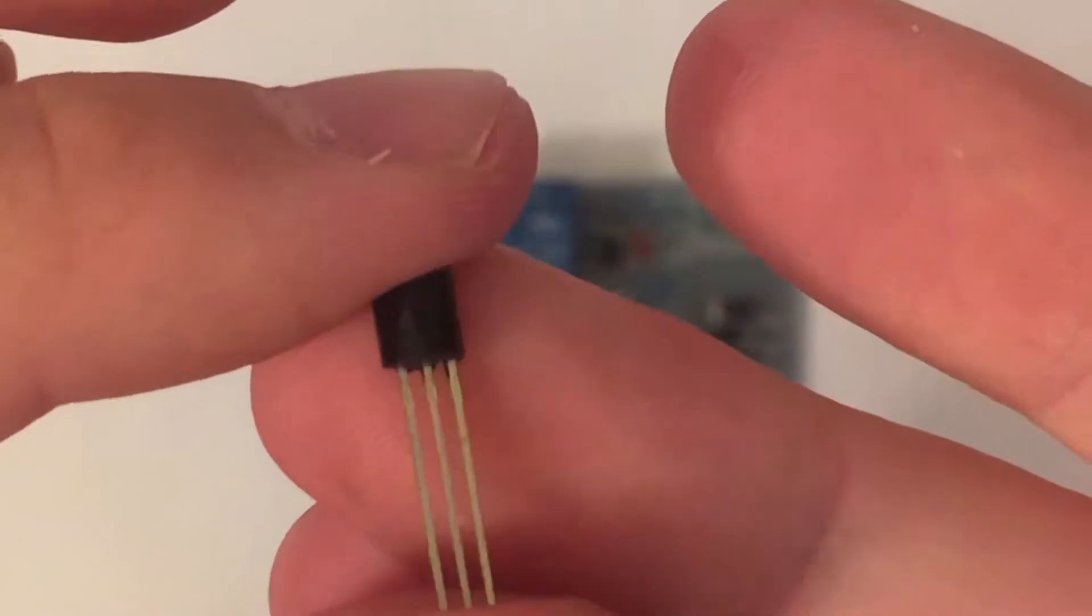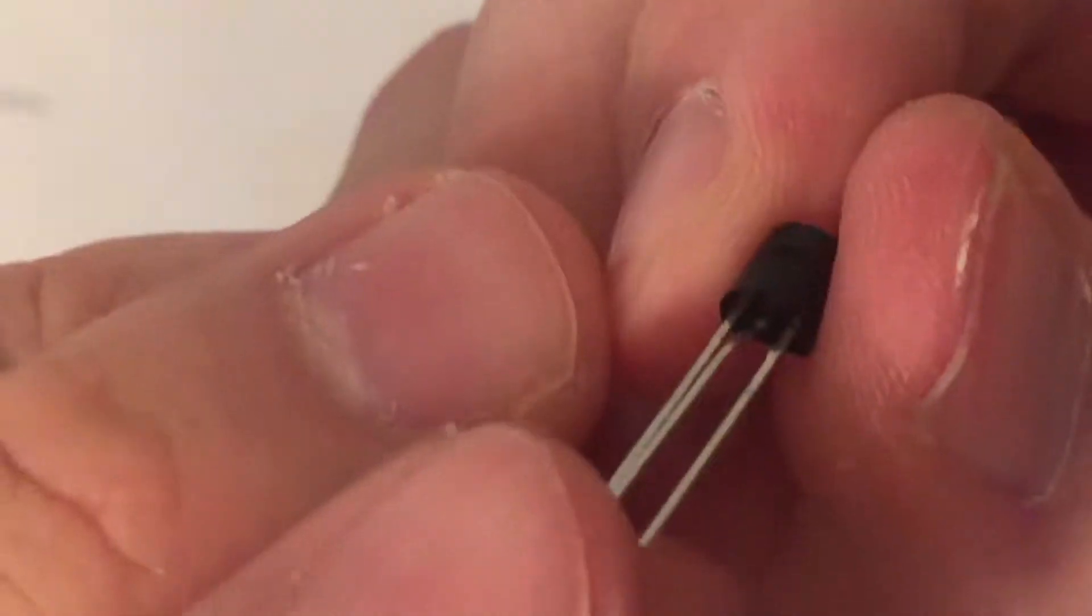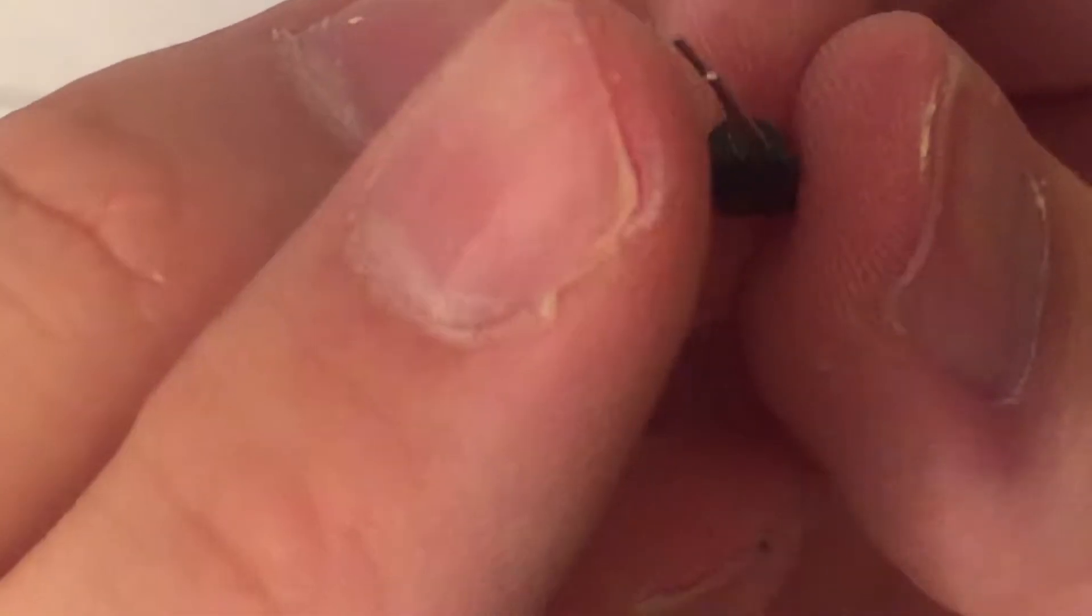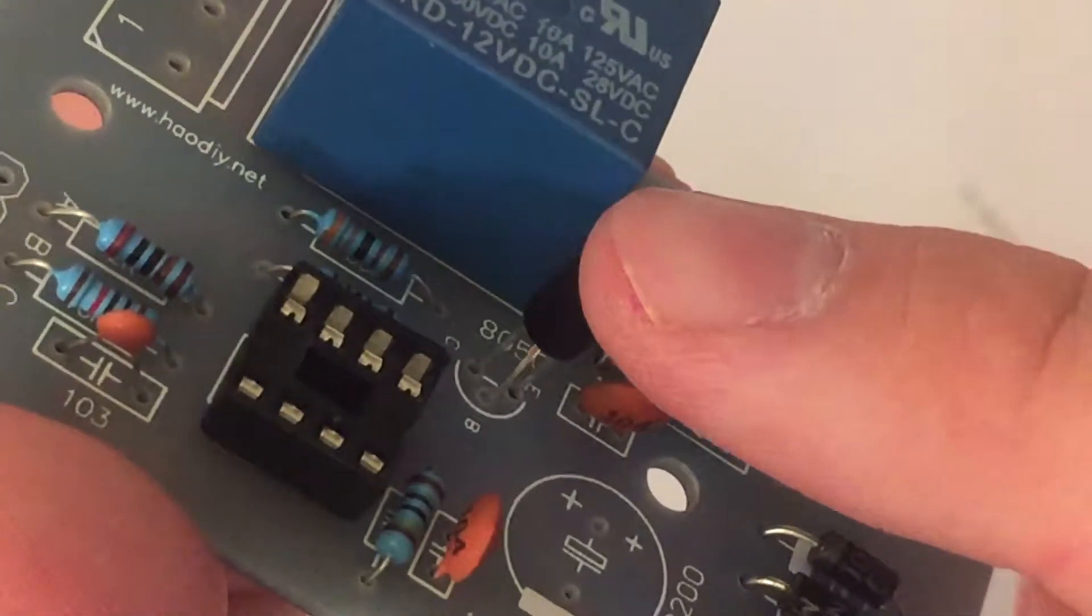Afterwards I added the transistor. On this PCB the middle leg of the transistor is on the front. So you should bend it with your fingers to make your life easier when inserting the part. This way it will go in nice and smooth.